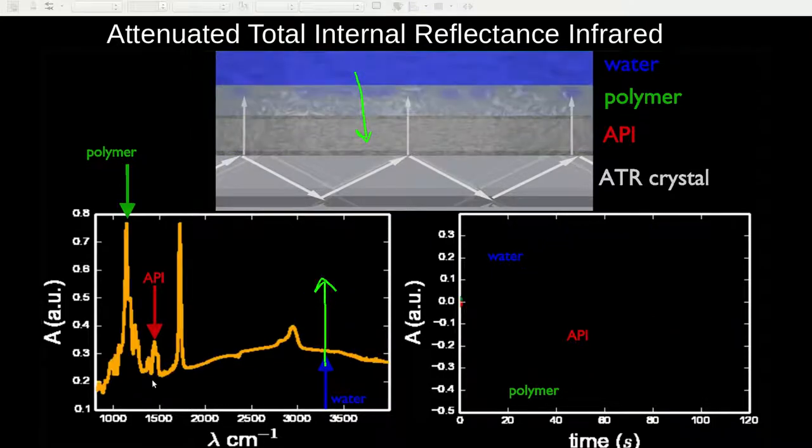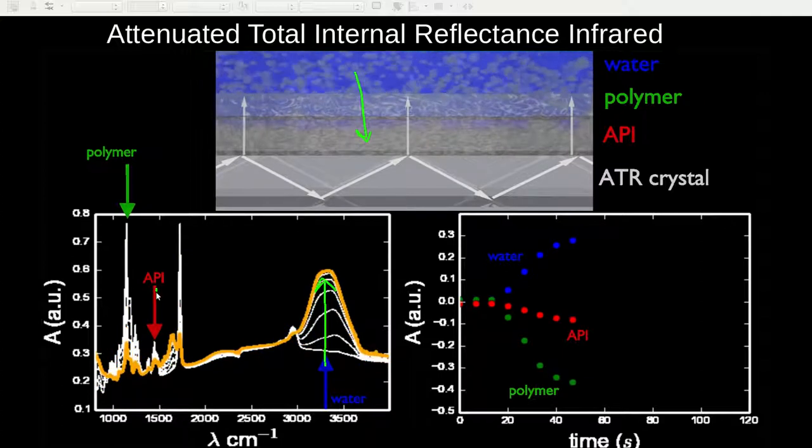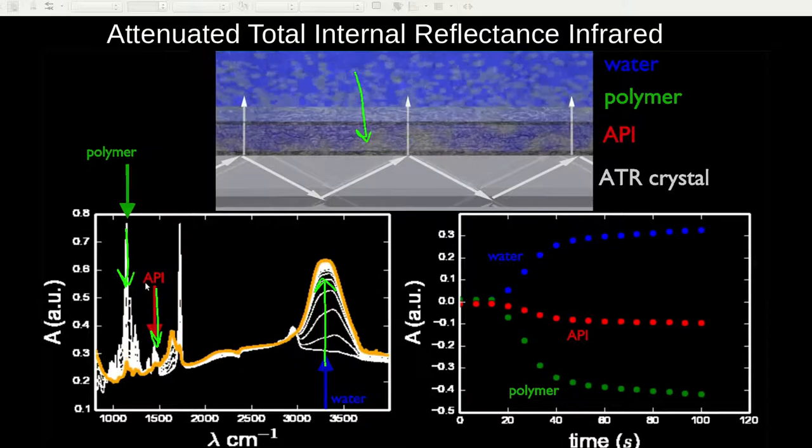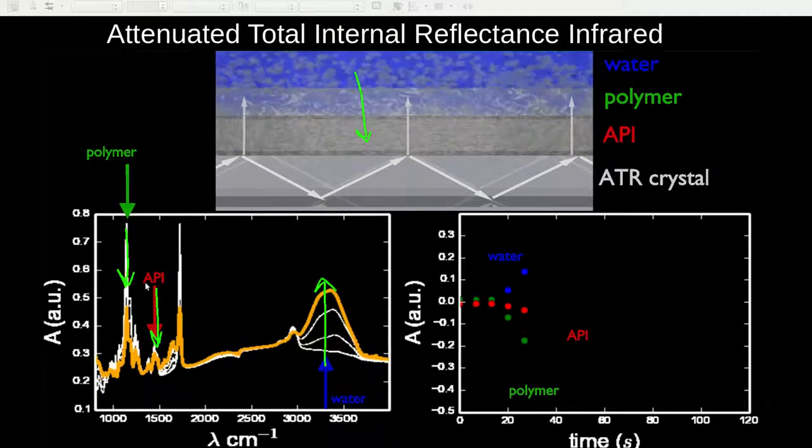Conversely, if we look at the bands associated with the polymer and the API, they initially start fairly high and then rapidly decrease as the polymer film dissolves and then subsequently later the API core begins to dissolve.